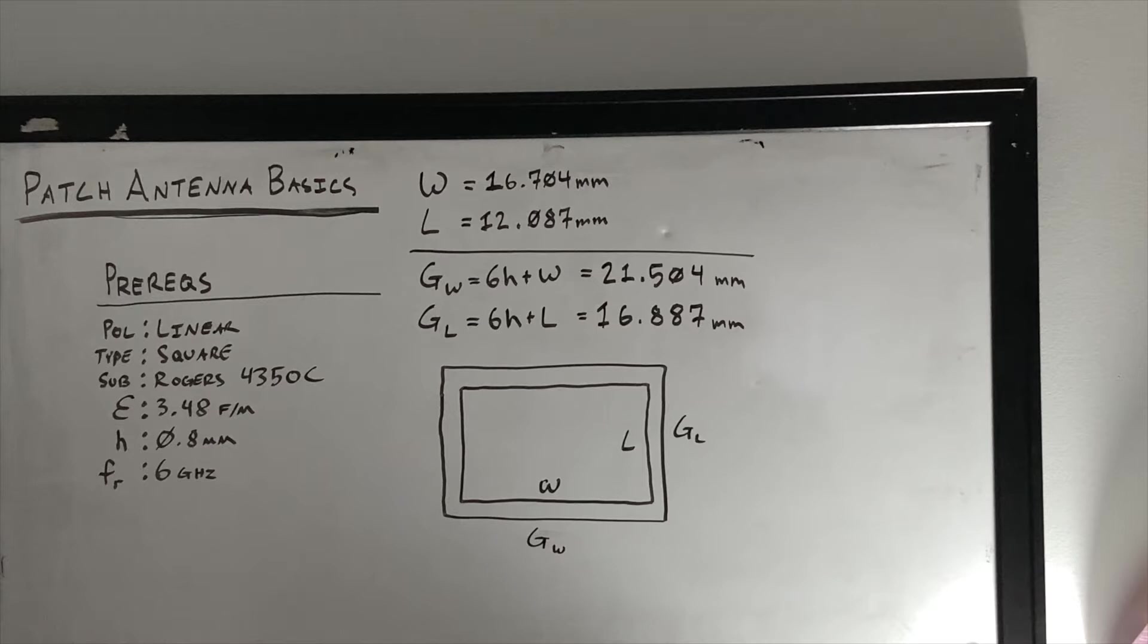Alright, so as you can see on the board, the ground width is equal to six times the substrate height plus the width, which is, in our case, 21.504 millimeters. And the ground length is six times the substrate height plus the length, which again, in our case is 16.887 millimeters. And the ground length ends up also being the substrate length as well. So the substrate and the ground plane should both be the same size. And then the patch, which sits atop the substrate, should be its normal patch dimensions.